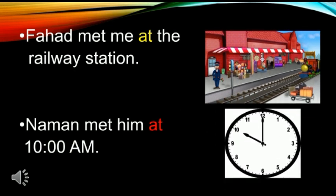'Fahad met me at the railway station' — in this sentence, the preposition 'at' is used as a preposition of place. 'Naman met him at 10 a.m.' — we have used 'at' to show the exact time. In this sentence, 'at' is a preposition of time.